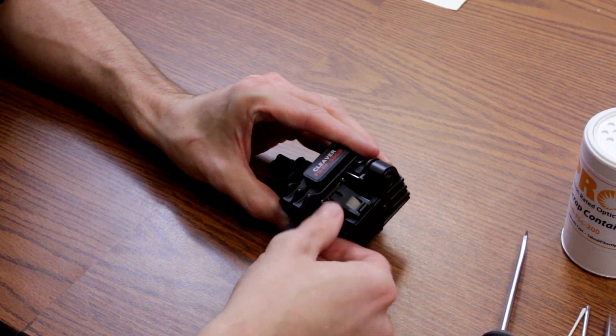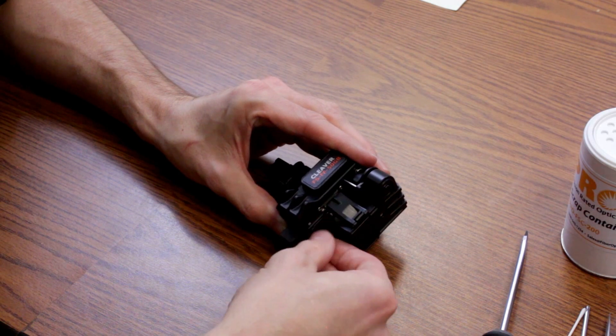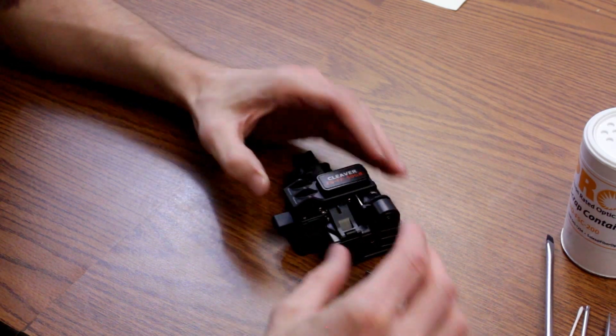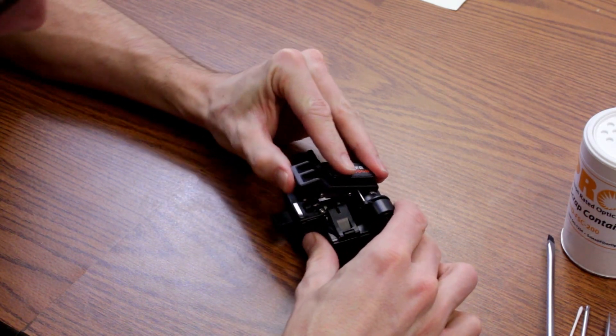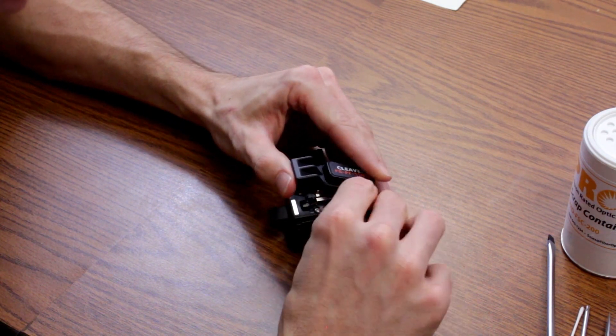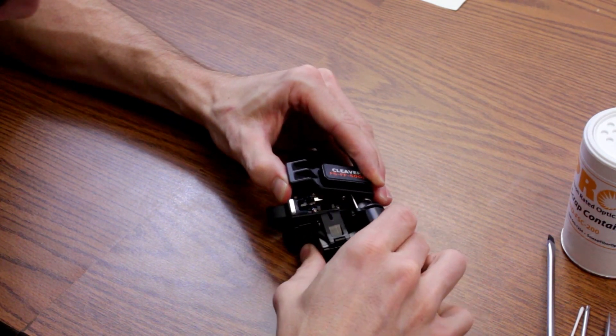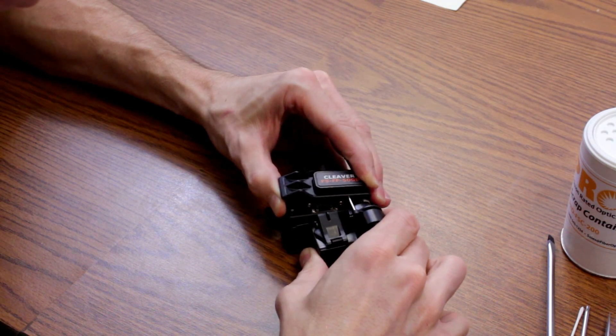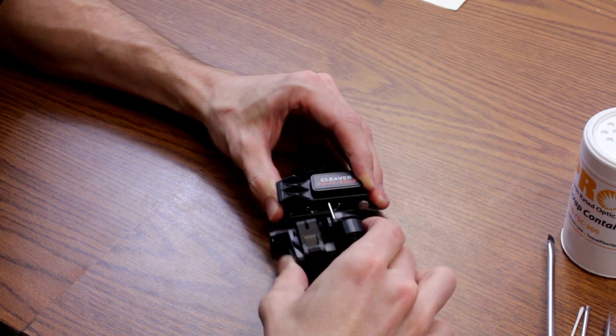Now once these screws are undone, it might fight you a little bit, but it's a pretty simple release. So you're going to pull this off and it's going to come right off.